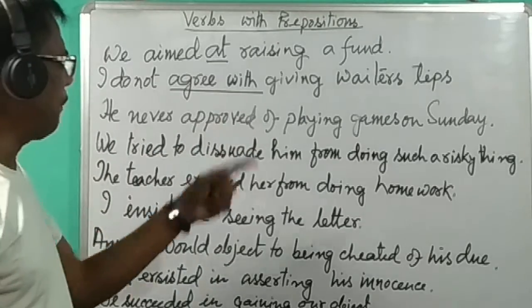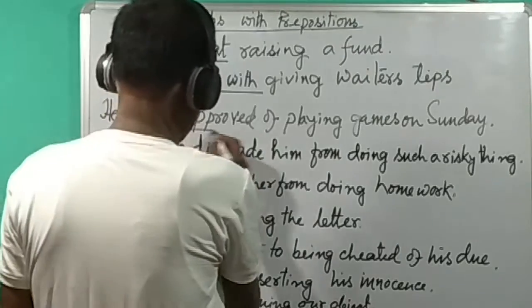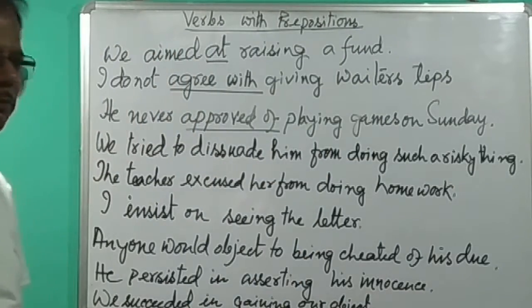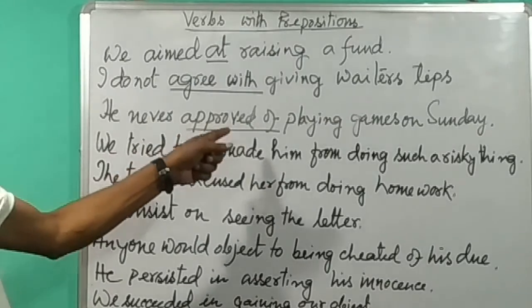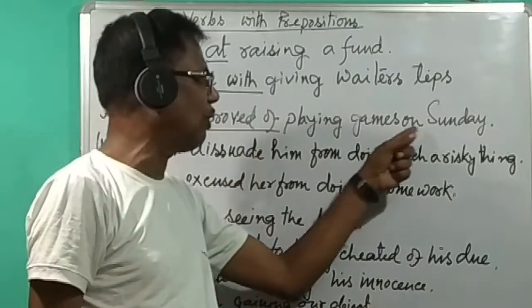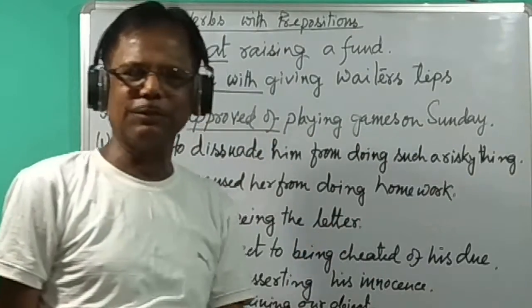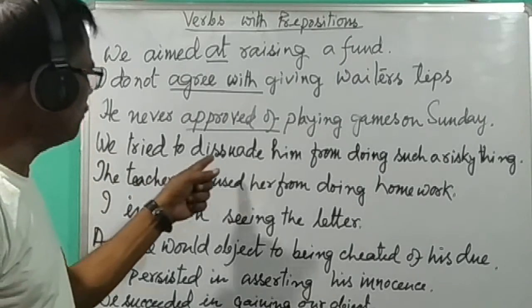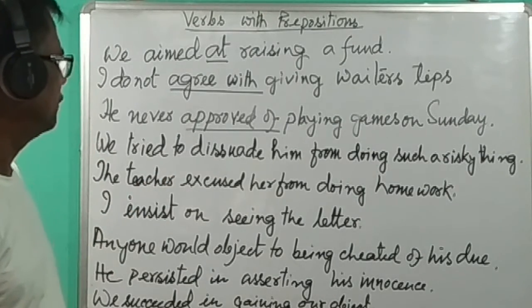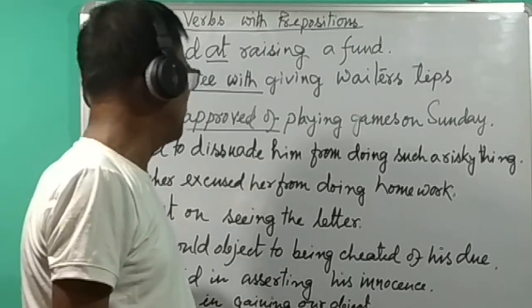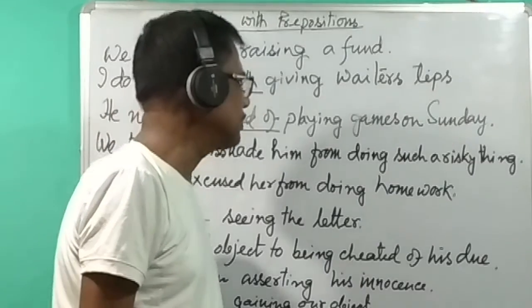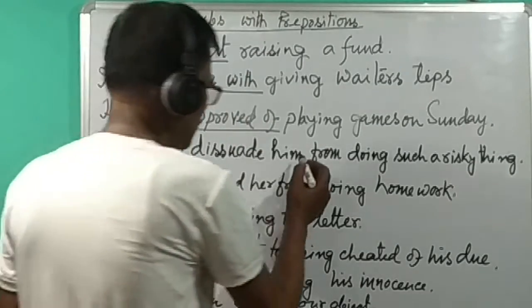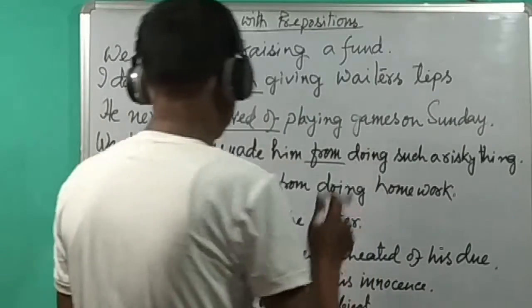He never approved of playing — 'playing' is the ING form of the verb. We also say: we try to dissuade him from doing such a risky thing. 'From' is the preposition, and 'doing' is the ING form of the verb.